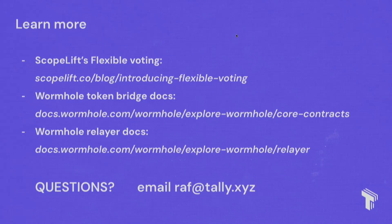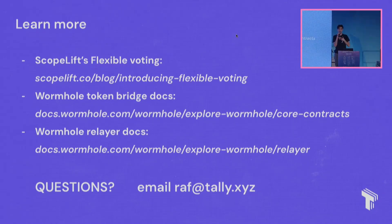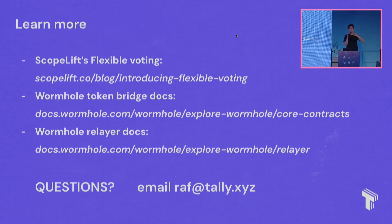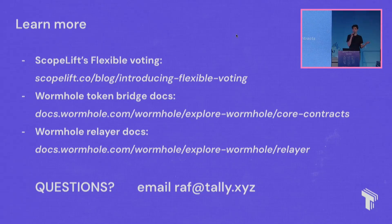That was a comprehensive overview of how all these pieces work and how they fit together. I'm happy to answer any questions — you can shoot me an email. I also wanted to share docs put together by ScopeLift on Flexible Voting, and by Wormhole on their token bridge docs and relayer tools that power this whole system. It's a great example of pulling together small composable primitives to build an application that solves both user problems and business problems with multi-chain tooling.